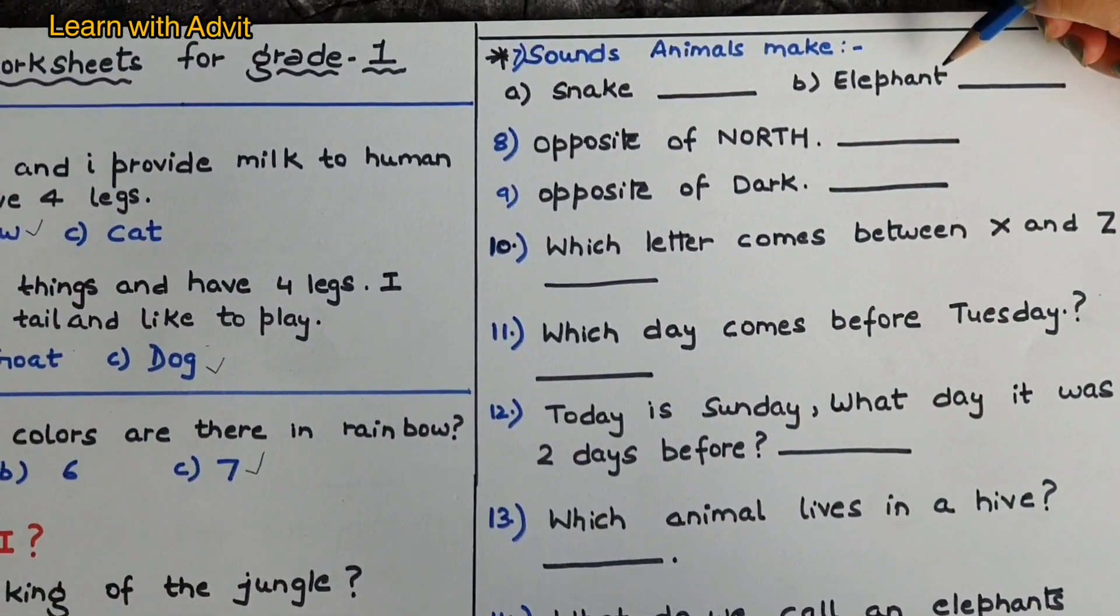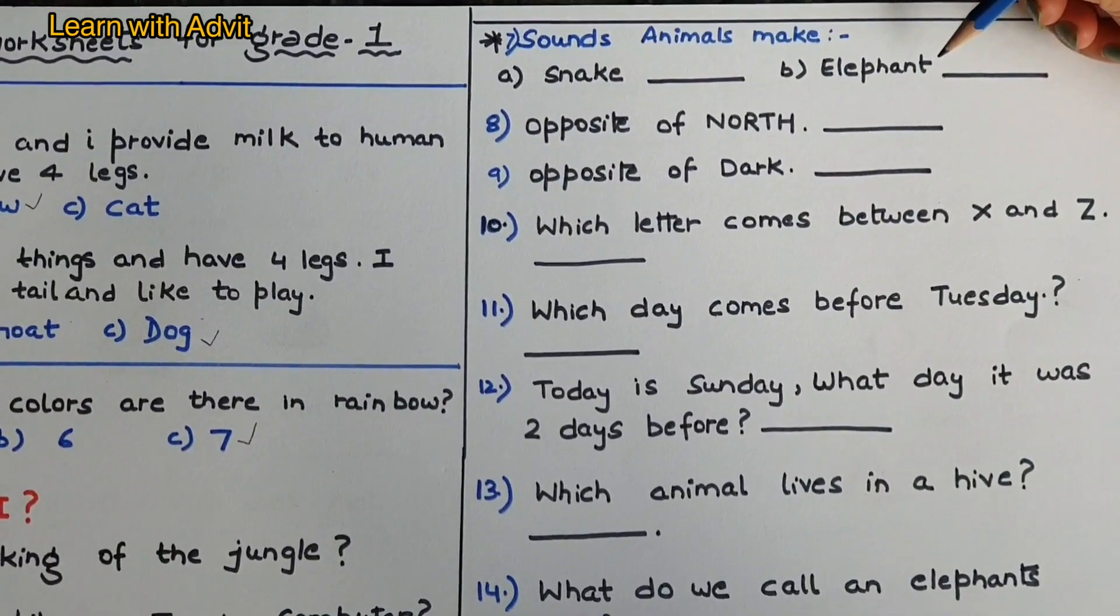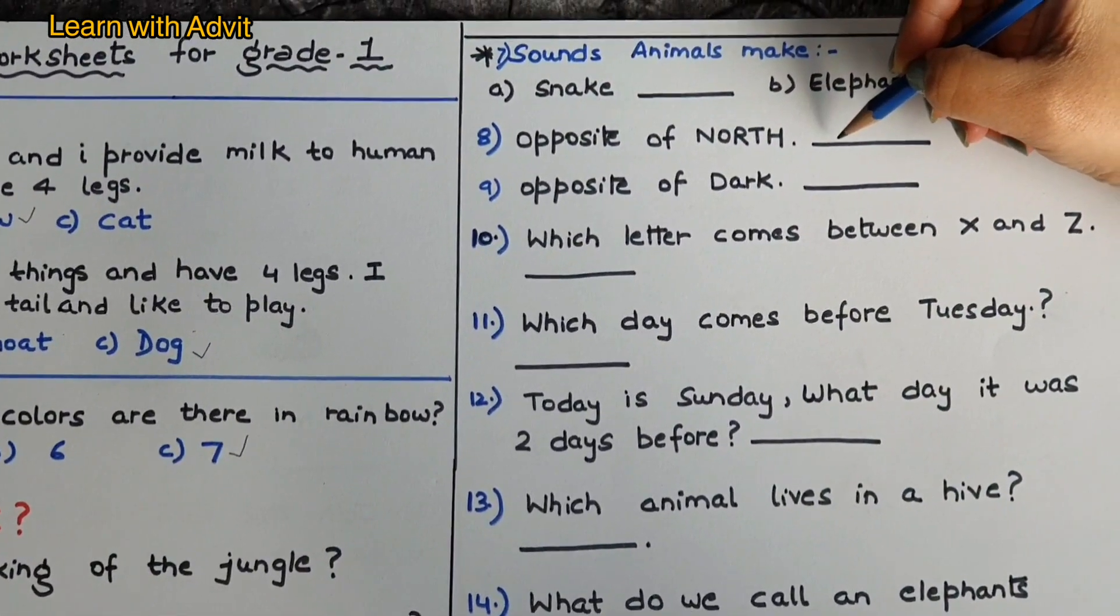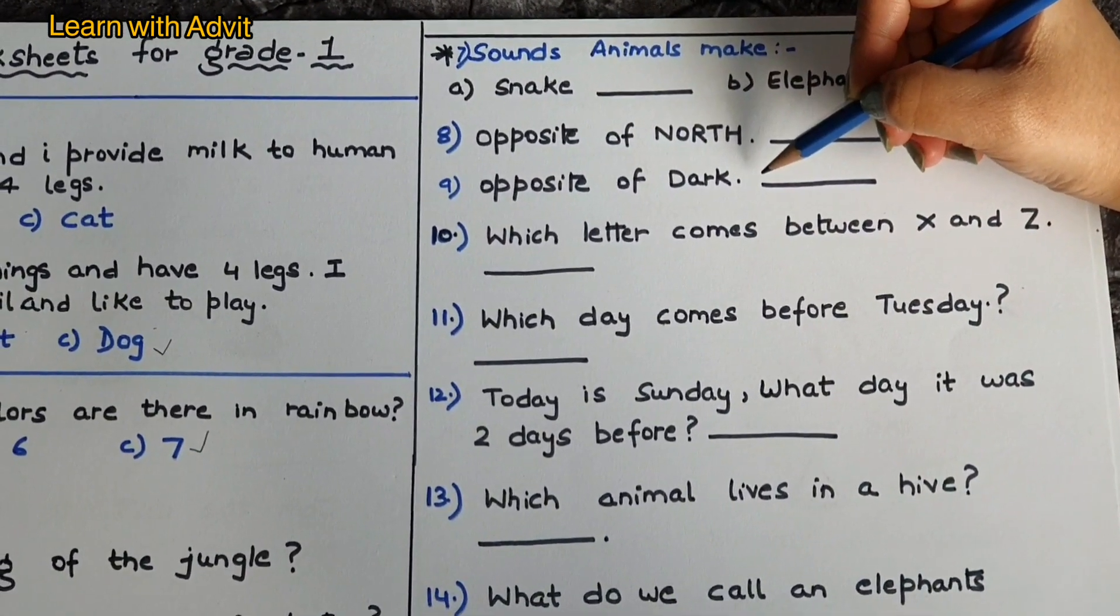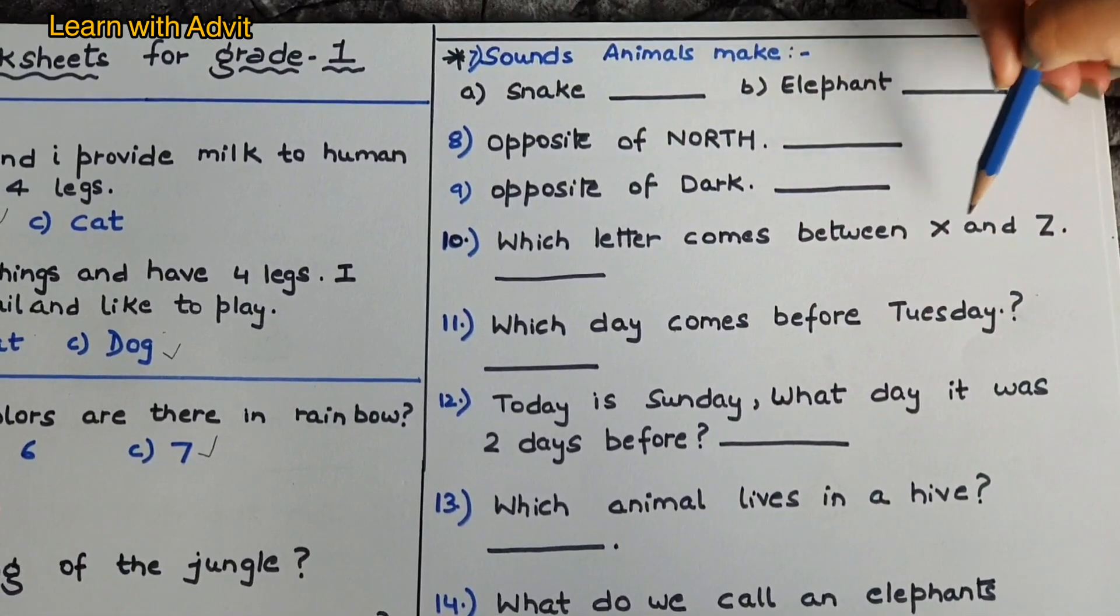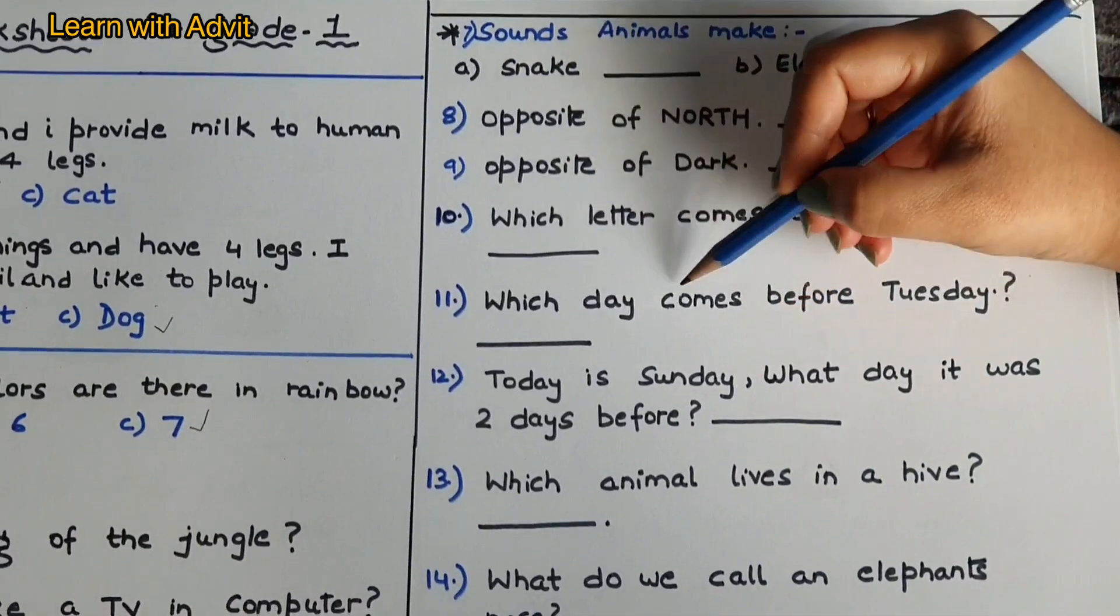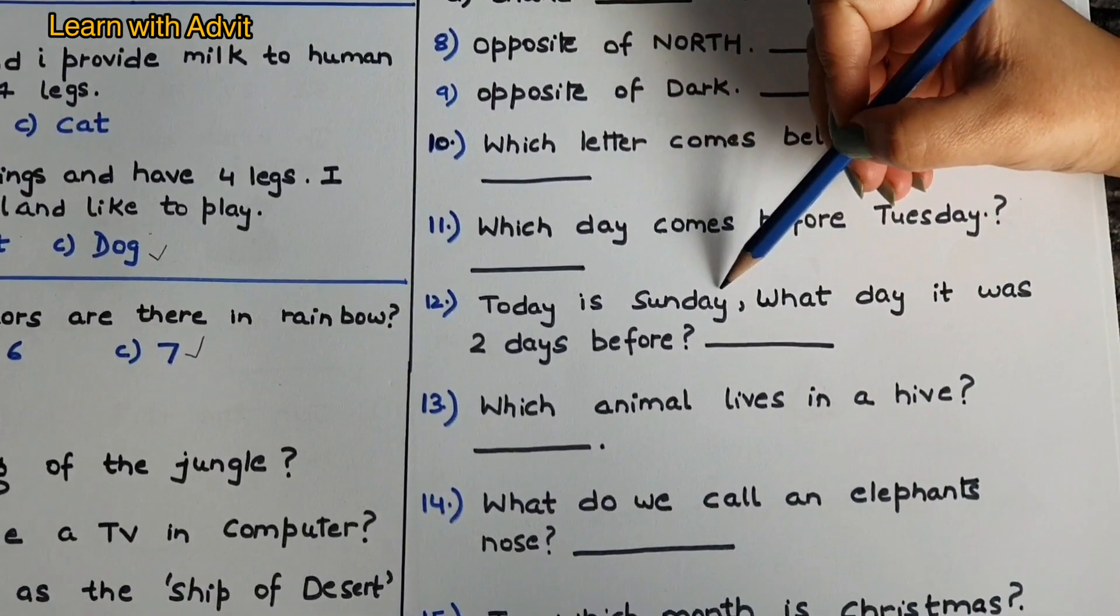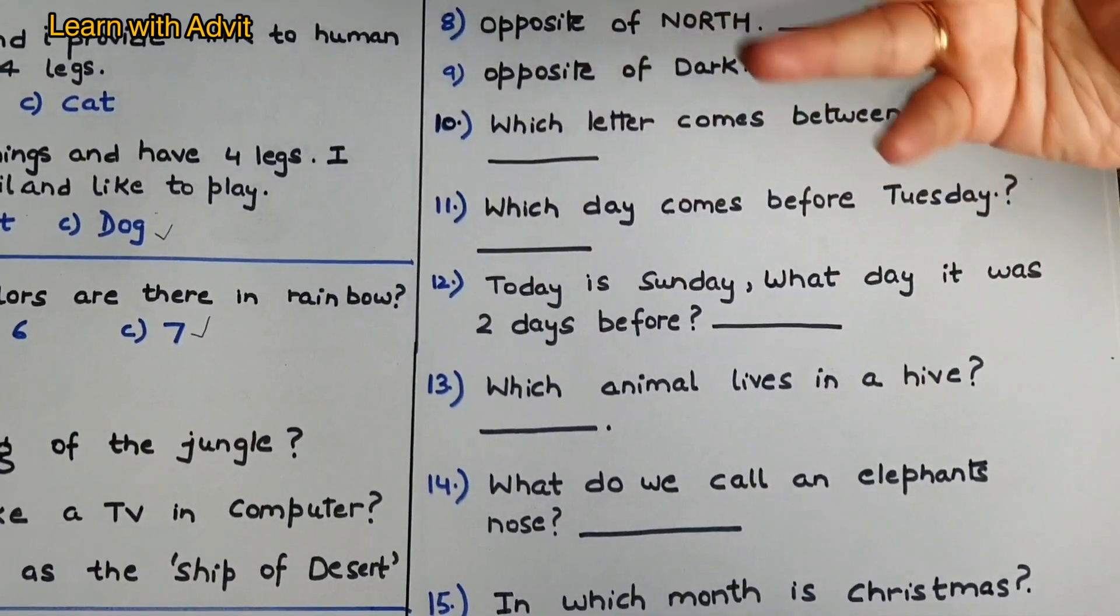Opposite of north is south, very good. Opposite of dark is light. Which letter comes between X and Z? Y. Which day comes before Tuesday? Monday.